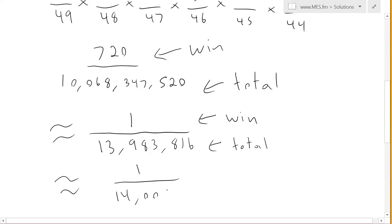So, that means you have to play 14 million total times to win just once. That's how difficult it is to win the lottery.